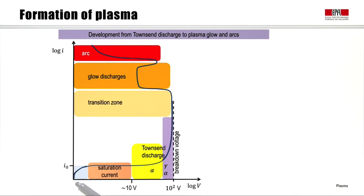In modules 5.2 and 5.3 we saw how breakdown could lead to very high densities in a plasma. As the density increases the voltage drops down to a glow discharge and can eventually form an arc. This is the development from a Townsend discharge to a plasma glow and arc.